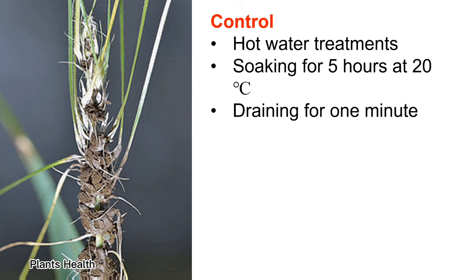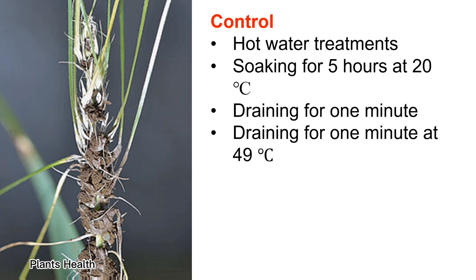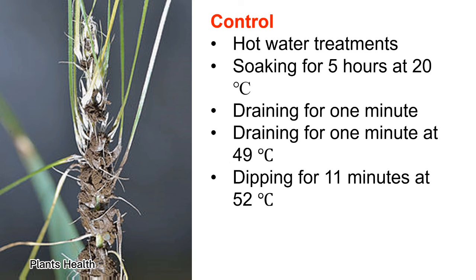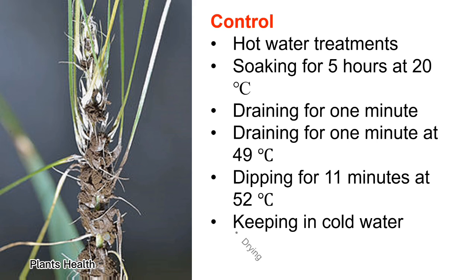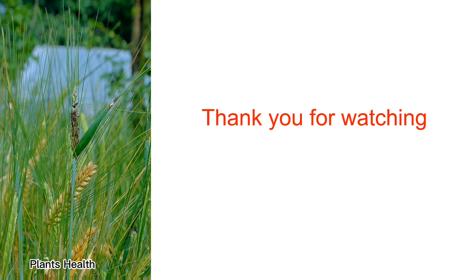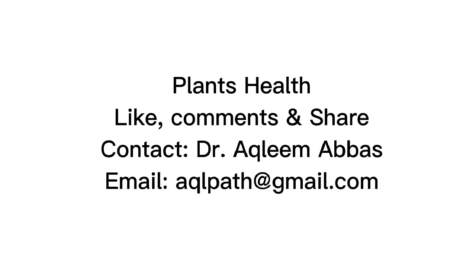Hot water treatment can also be used to control loose smut disease: soaking for 5 hours at 20°C, draining for 1 minute, then treating for 1 minute at 49°C, dipping for 11 minutes at 52°C, keeping in cold water, and finally drying. Thank you for watching.